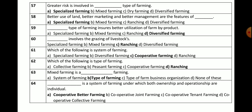Question number 64: Which is the system of farming under which both ownership and operationship are individual? Options: cooperative better farming, cooperative joint farming, cooperative tenant farming, or cooperative collective farming. The correct answer is cooperative better farming — in cooperative better farming, both ownership and operationship are individual.